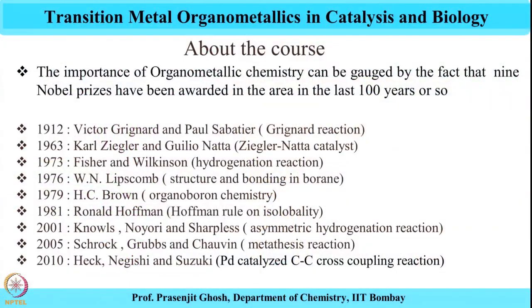To begin with, the first Nobel Prize went to Victor Grignard and Paul Sabatier for the Grignard Reagent discovery as early as 1912. This was a seminal discovery which allowed chemists to form carbon-carbon bonds. However, there was a great challenge associated with it, particularly owing to the air and moisture sensitivities of this organo-alkaline-earth reagent like organomagnesium compounds, and another limitation was carrying out C-C bond formations in a stoichiometric fashion.